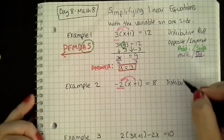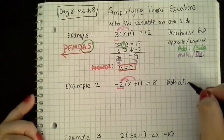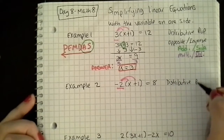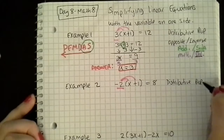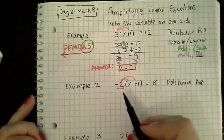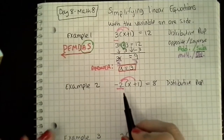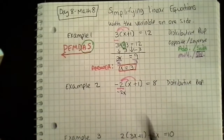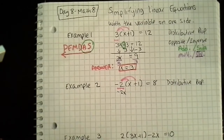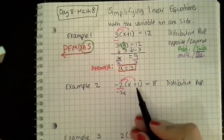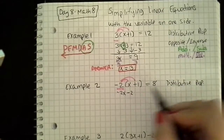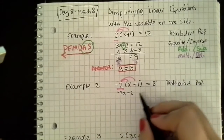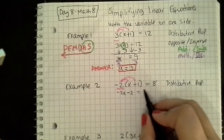So I'm going to go ahead and explain what I'm using. Multiplying that negative 2 gives me a negative 2x, and negative 2 times a positive 1 is a negative 2, equals 8.